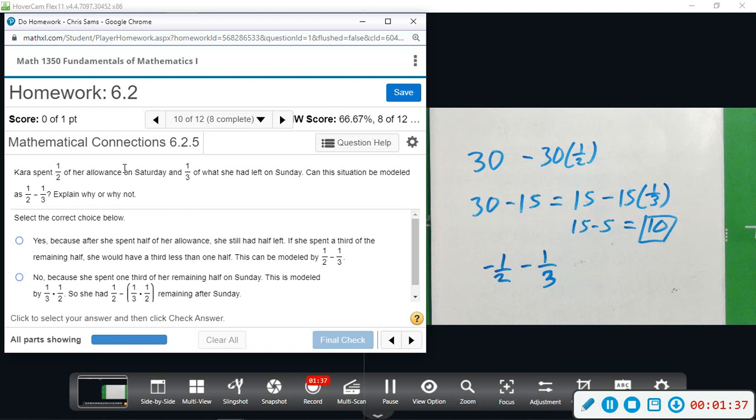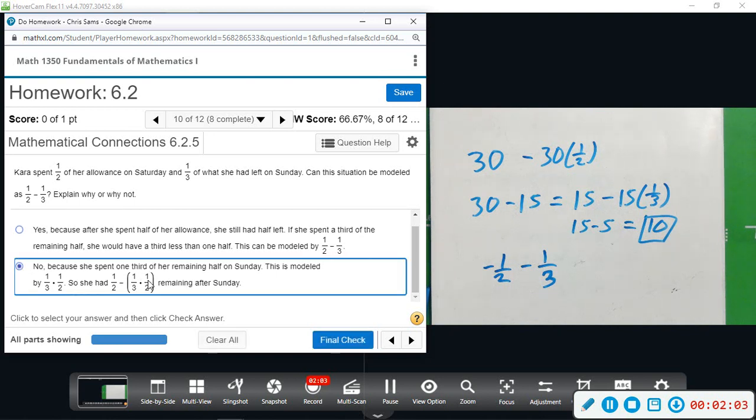One-third of what she has left and a half of what she had. So no, because she spent one-third of her remaining half on Saturday, this is modeled by one-third times a half. So she had one-half minus that, so she actually spent a sixth of what she had overall. This would be the better way to represent that.